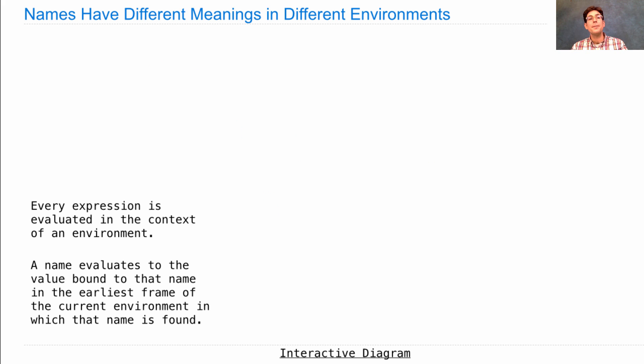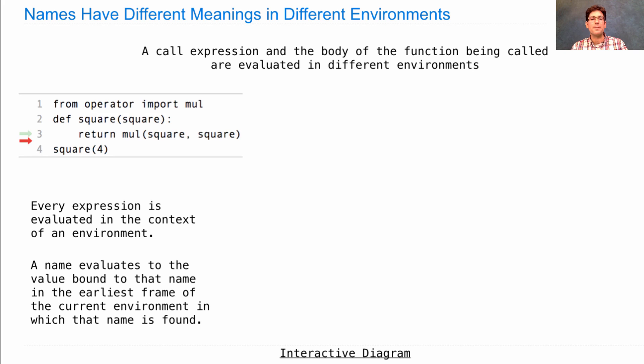Okay. So names can have different meanings in different environments. And that was the situation in an example last time, when we had square as both the name and the formal parameter of the same function. And things still worked. We're going to understand why. So a call expression and the body of the function that's being called are evaluated in different environments. Here was the example. def square square return mul square square, and then we square 4. So what's happening here? Well, giving 4 the name square in order to multiply it by itself.